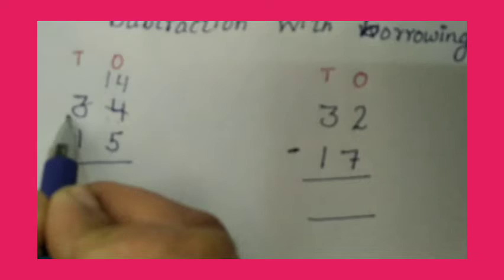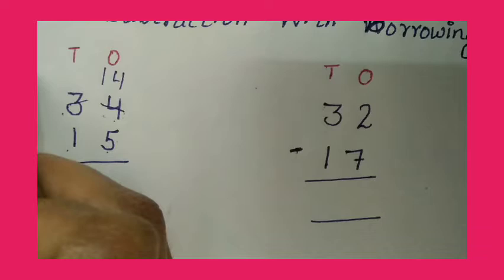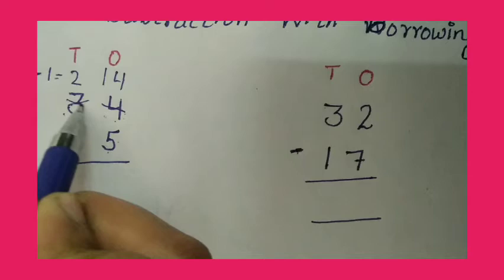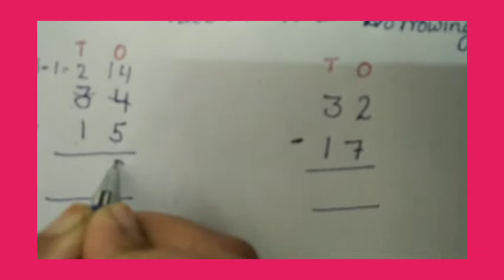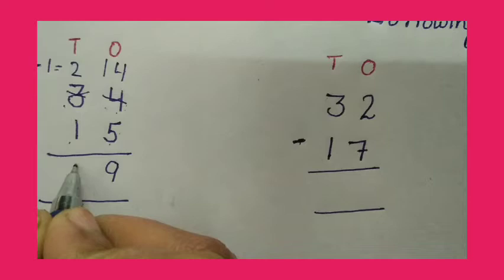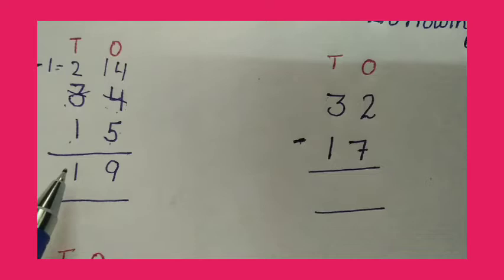What did we do here? We have 3 tens. We have borrowed 1 ten. Now 3 minus 1 is equal to 2, so we will write here 2. 14 minus 5 is equal to 9. 2 minus 1 is equal to 1. So students, 34 minus 15 is equal to 19.